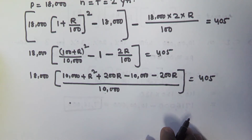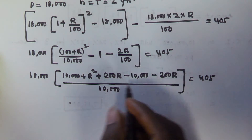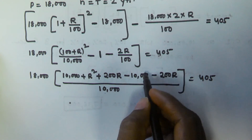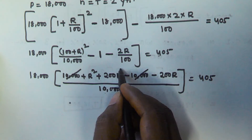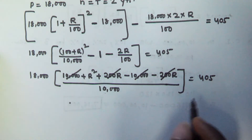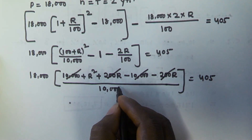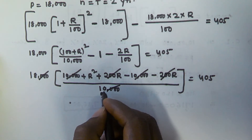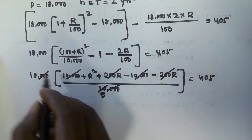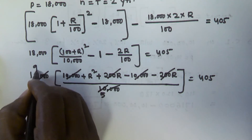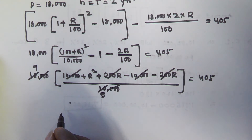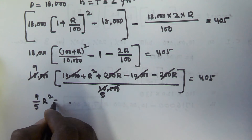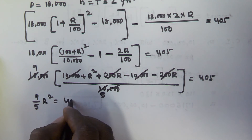So simplifying, the 10,000 terms cancel and the 200R terms cancel, leaving us with 18,000 into R²/10,000 equals 405. Simplifying further — cancelling zeros — we get 9R²/5 equals 405.